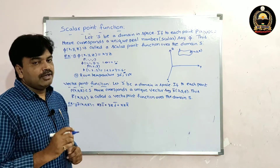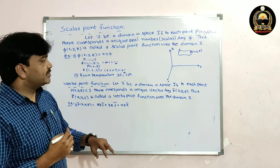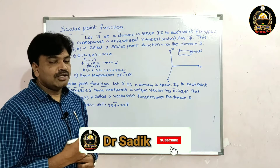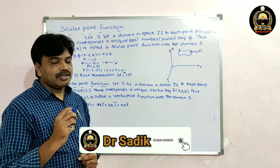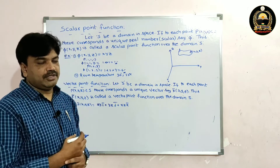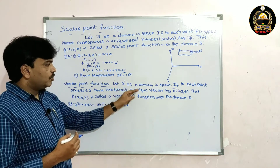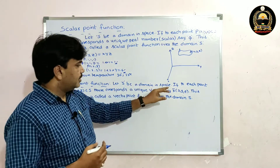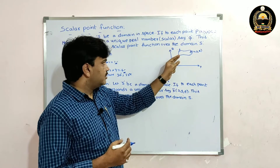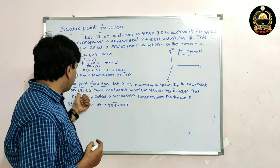Next definition: vector point function. You can guess the definition — previously we had a unique real number; this time it is a unique vector. Let S be a domain in space.